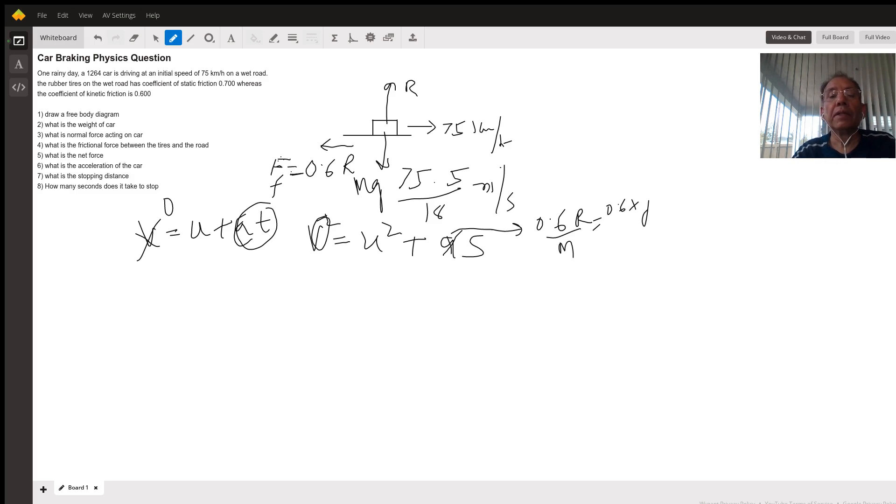For an initial velocity of 75 kilometers per hour converted to meters per second, there is a deceleration. The deceleration equals negative the force of friction divided by mass. The force of friction is 0.6 times R upon mass, where R is 1264g.